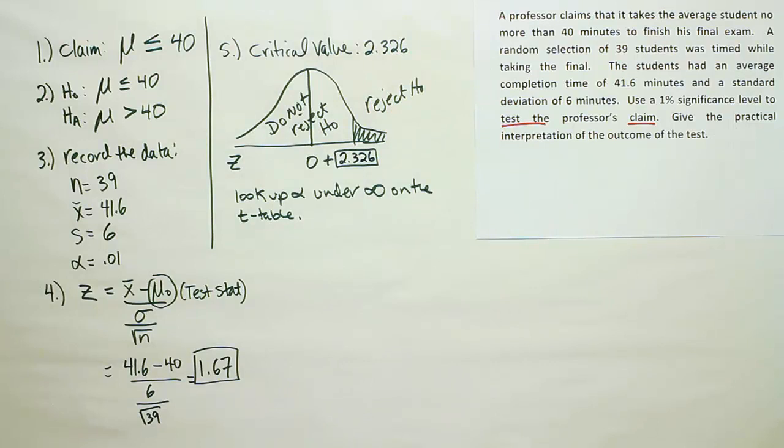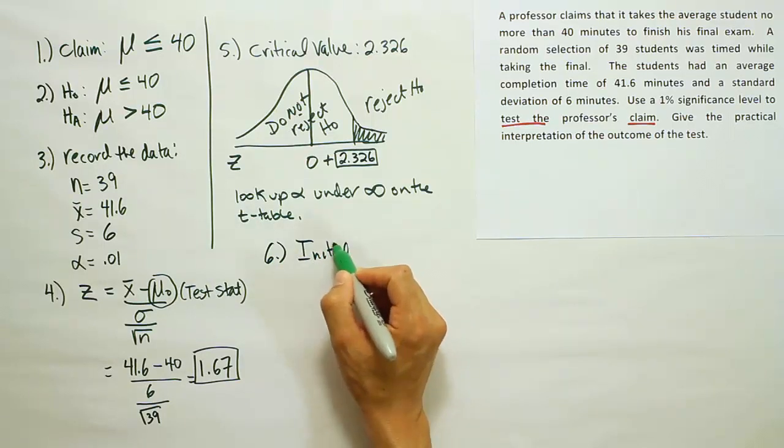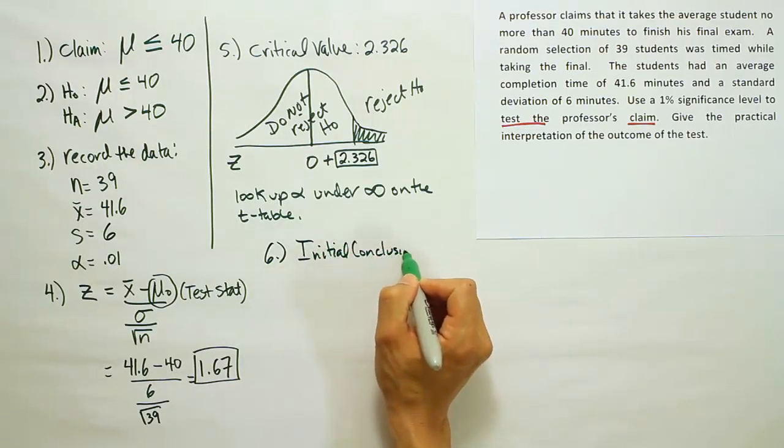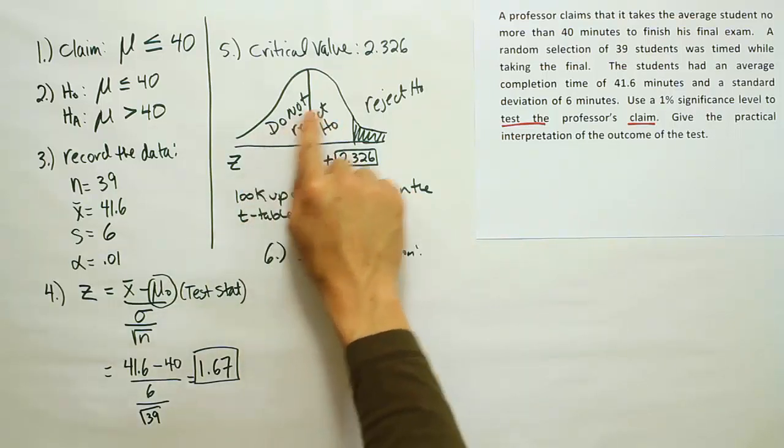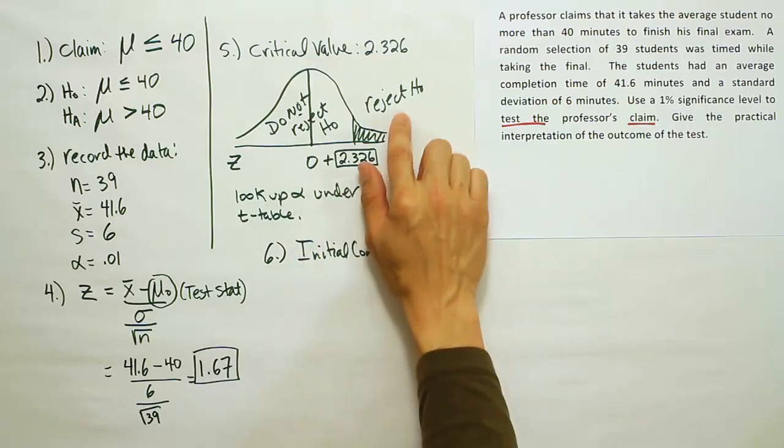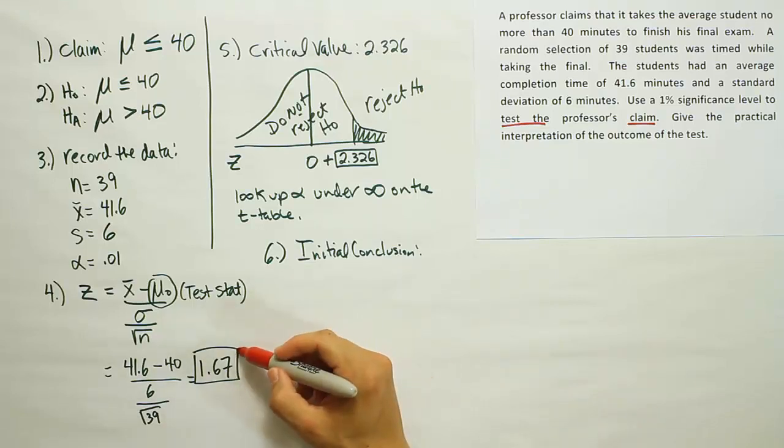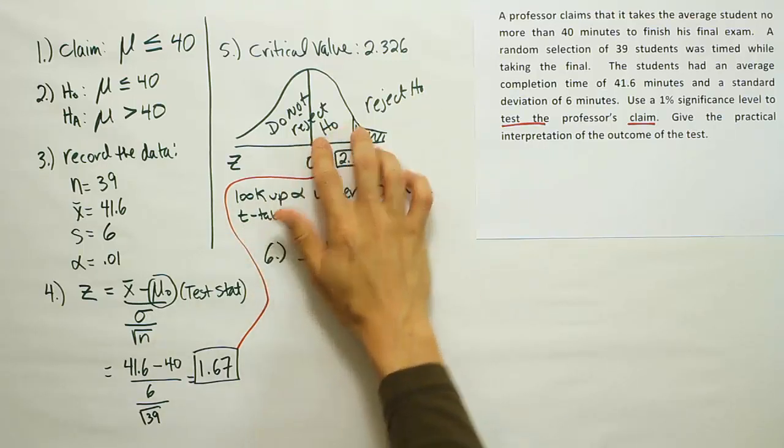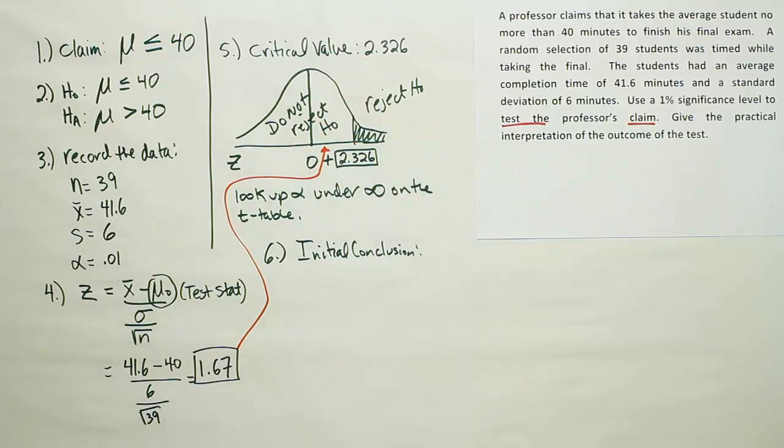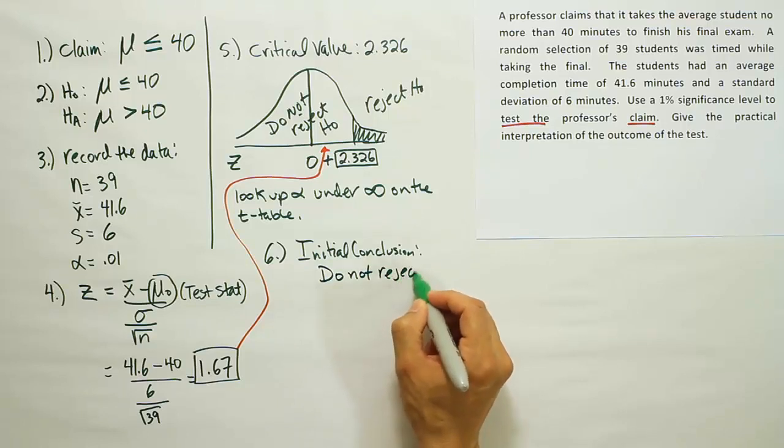All right, now that we have the critical value, it's time to form the initial conclusion, our step 6. The initial conclusion involves us comparing our test stat to our critical value. If the test stat on this number line here ends up in the white space here, we will not reject H0. But if it ends up all the way into the tail, we're going to reject H0. So when I look at this test stat of 1.67, I realize that on the curve, it would be somewhere over here. It's before 2.326. And if it's in this part of the curve, we're not going to reject H0. So our conclusion is do not reject H0.